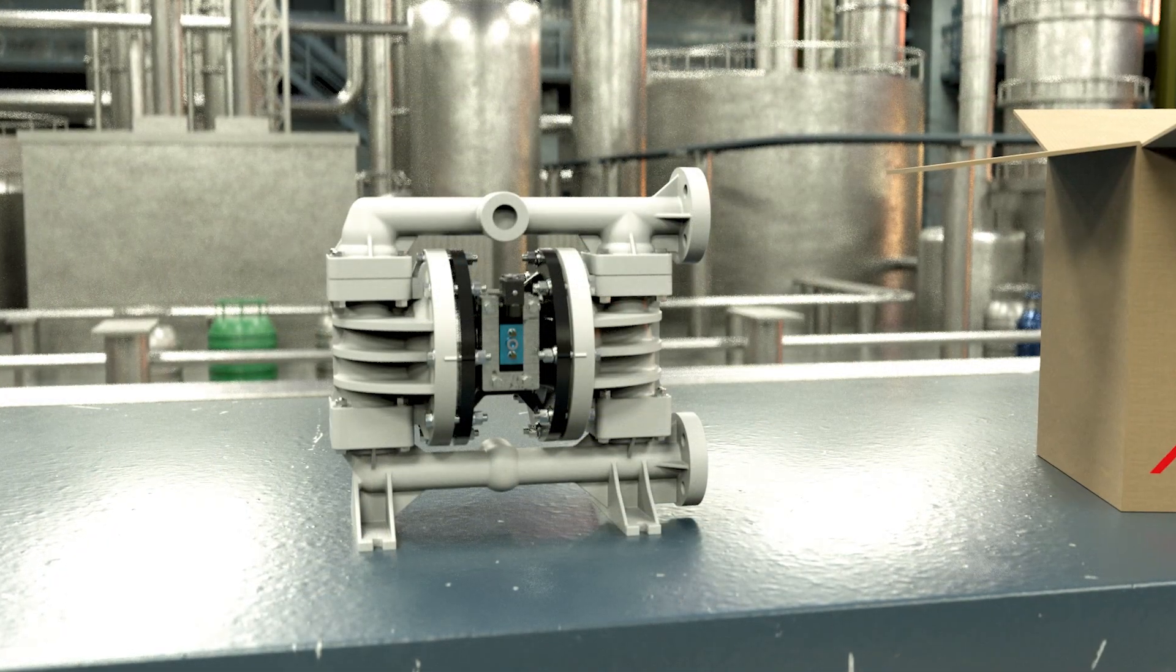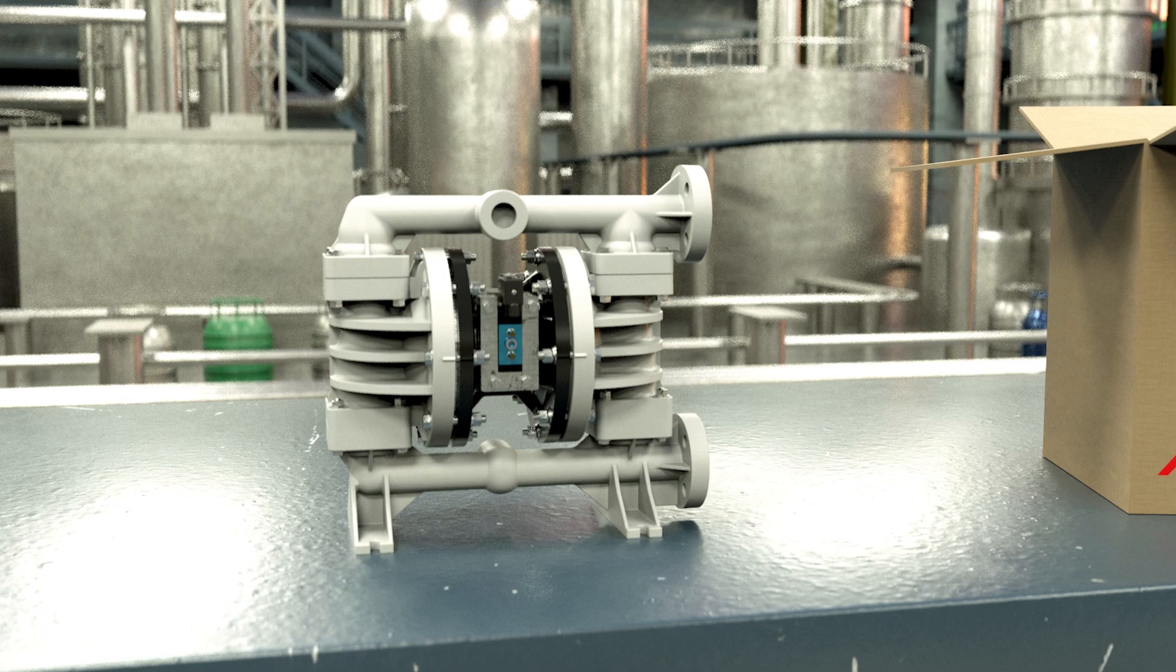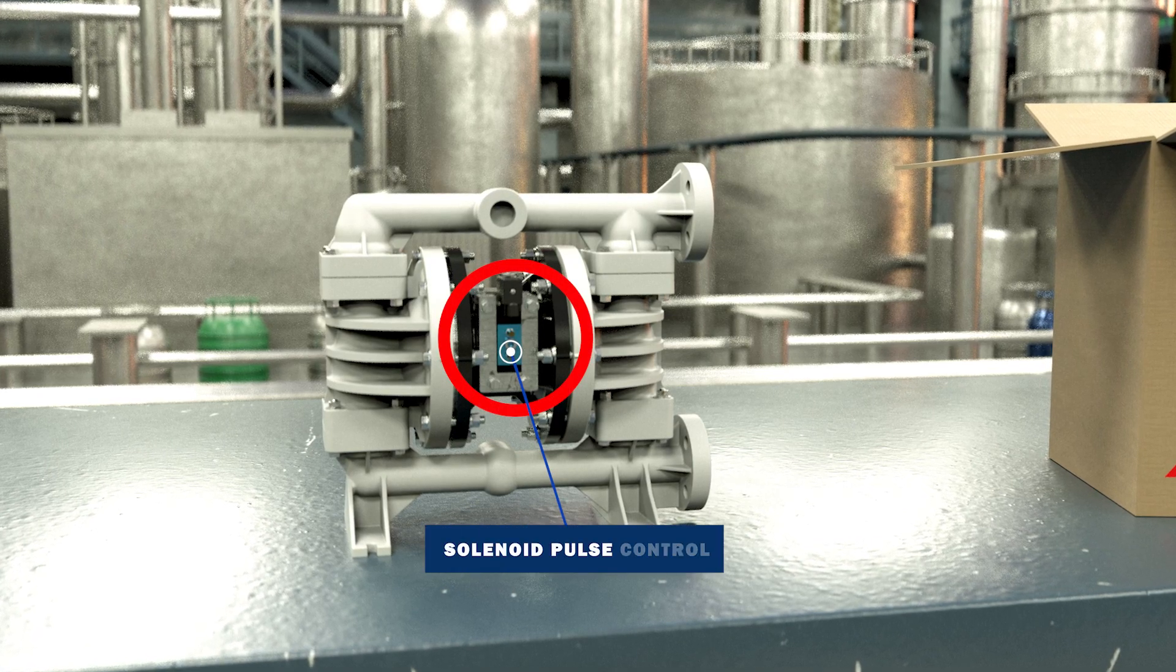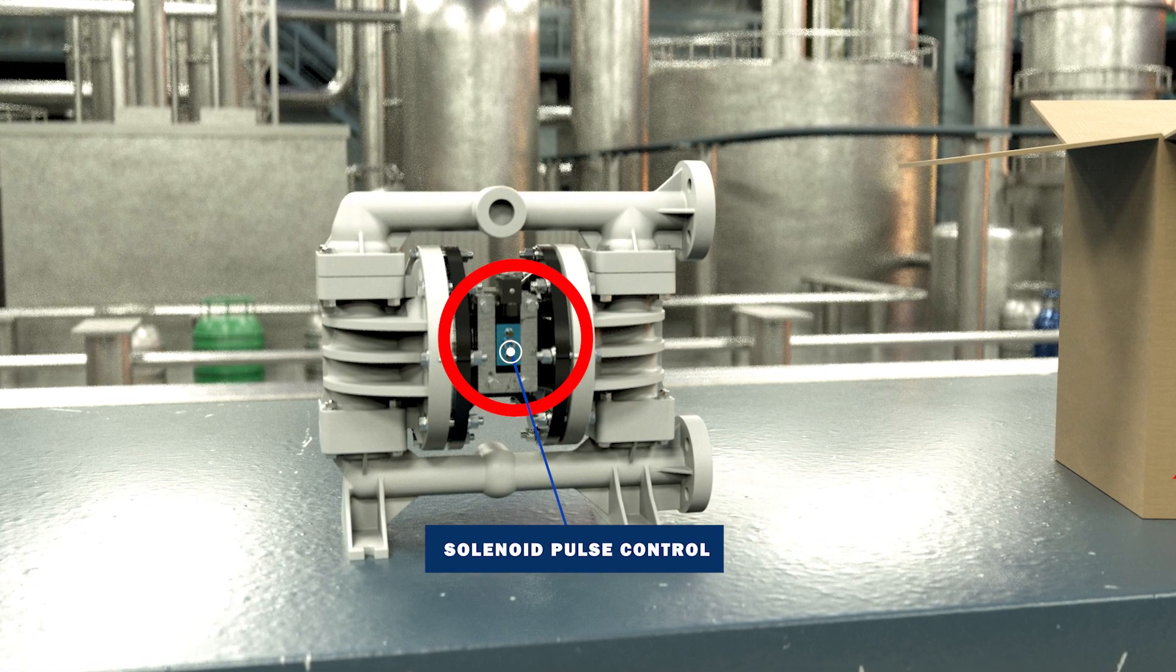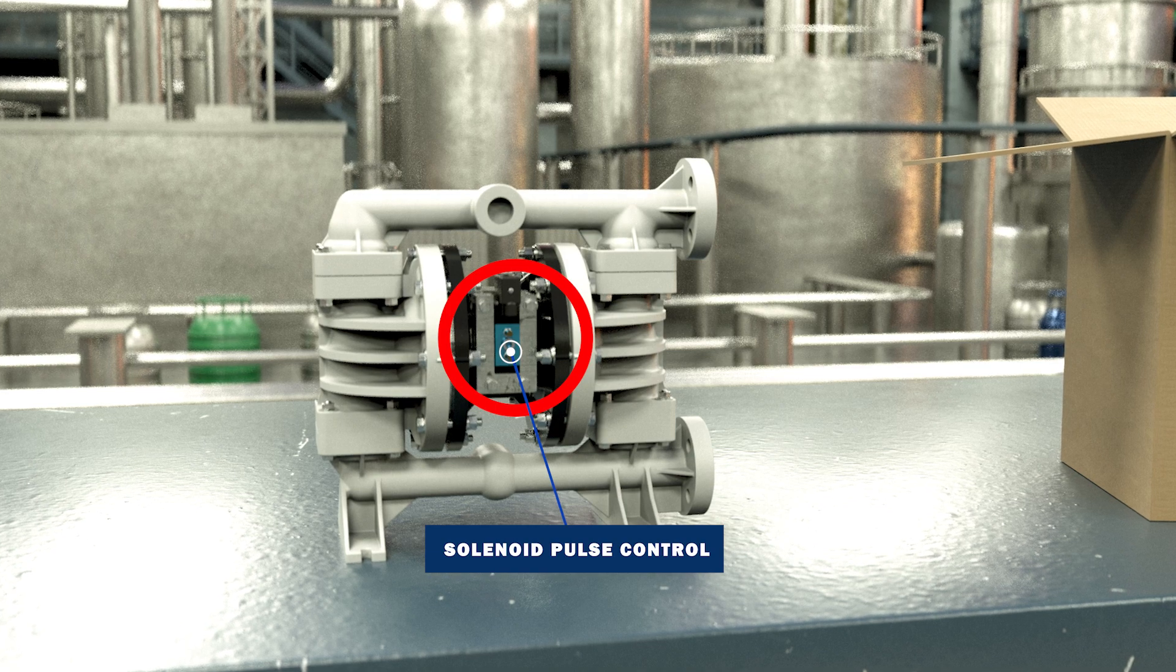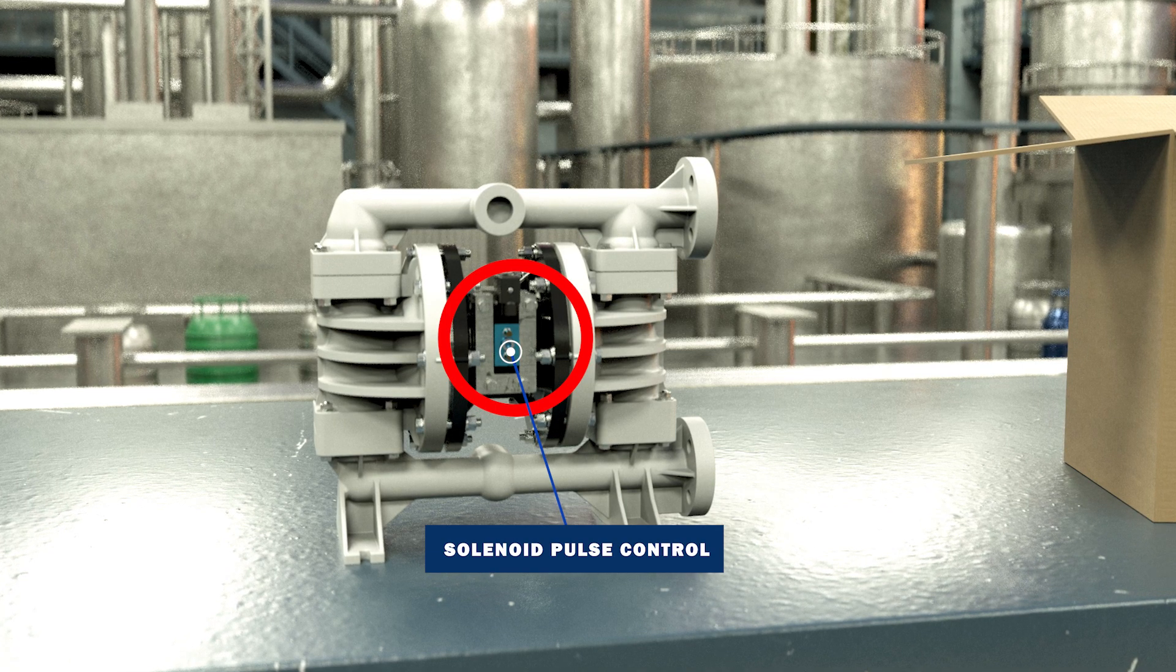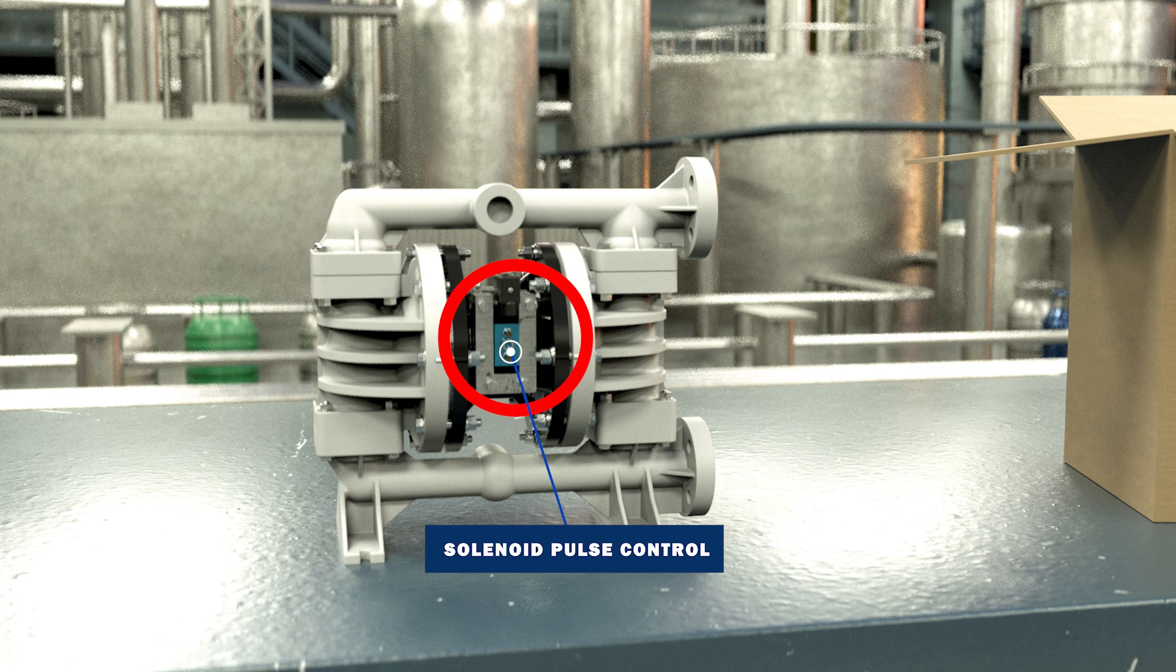For metering and dispensing applications, some all-flow pumps can be configured with a solenoid pulse control that integrates the pump with external controls, such as an industrial PLC. This provides speed and flow rate control of the pump, which is crucial for dispensing and dosing applications.